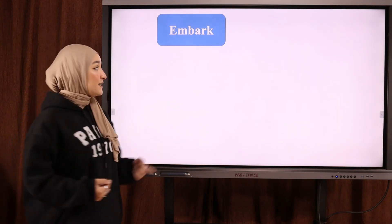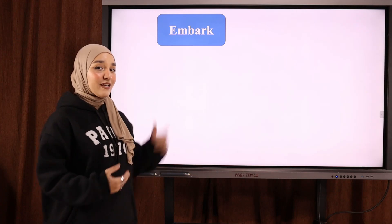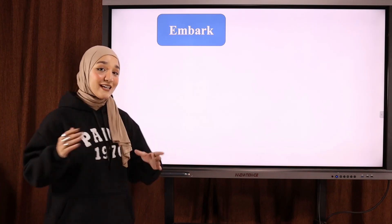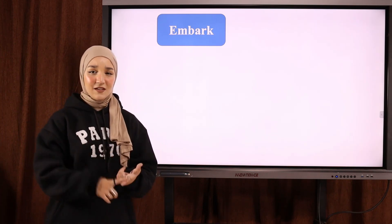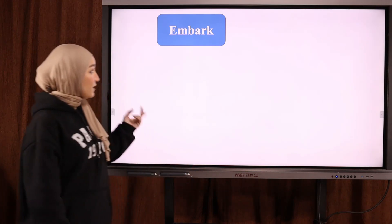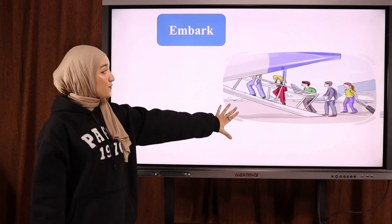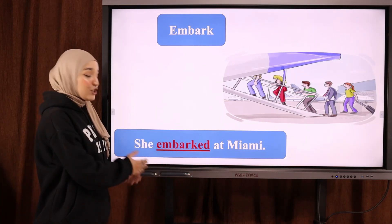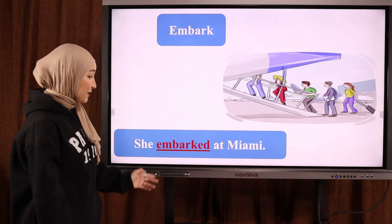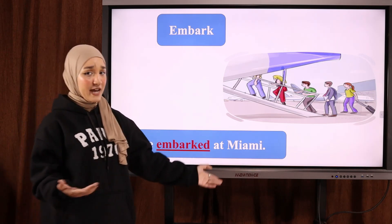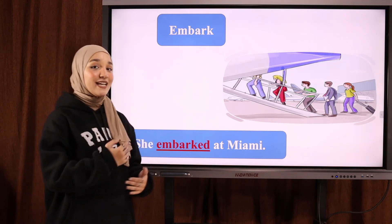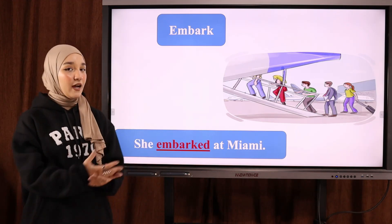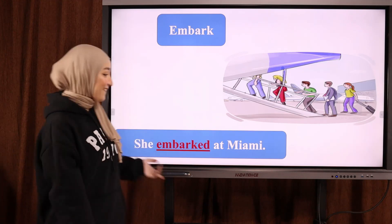The opposite is 'embark'. Embark is the opposite of disembark. Disembark was الهبوط, so embark is الصعود — onto a ship (سفينة), a plane (طائرة), or any vehicle (أي مركبة). Here's the example: 'She embarked at Miami' — صعدت على الطائرة في Miami. To embark is to get on a plane or ship — ركوب طائرة أو سفينة.